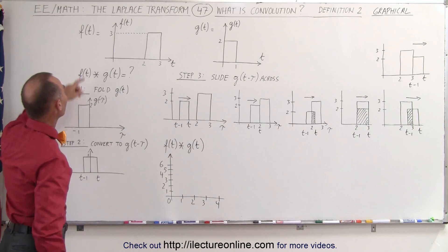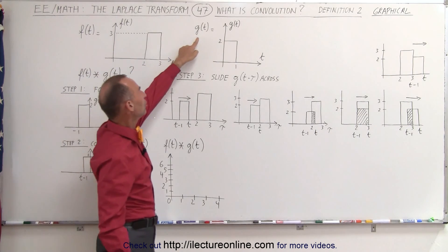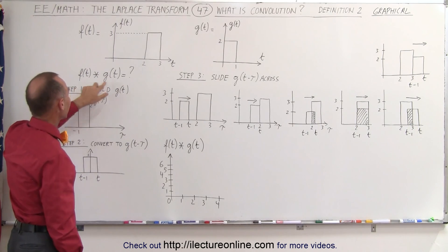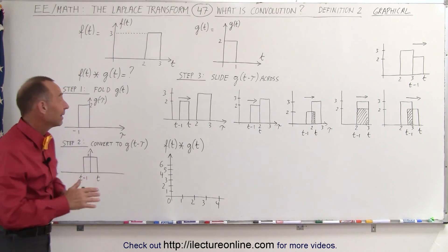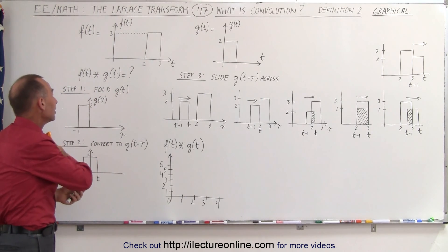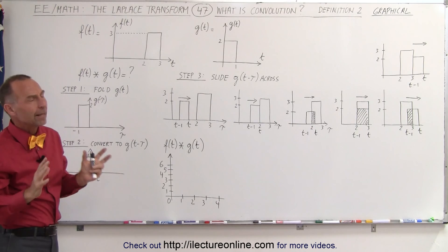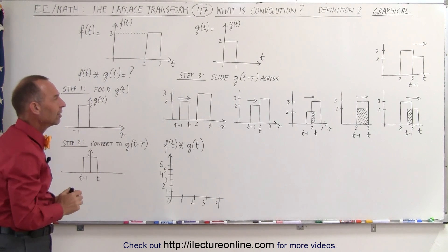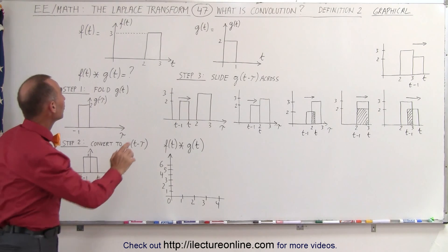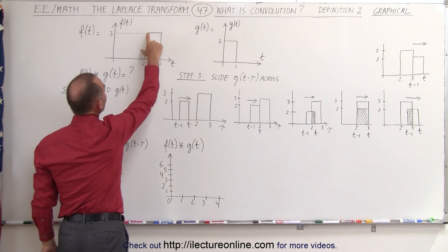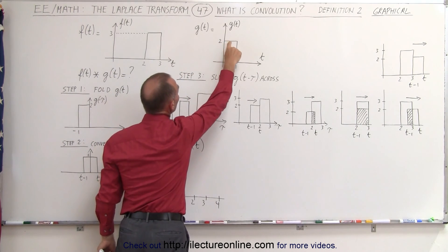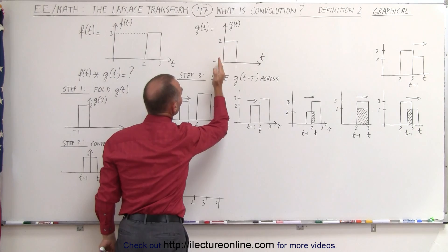Let's say we have two functions, f of t and g of t, and we're trying to find the convolution of f of t and g of t. The convolution of f of t and g of t is exactly the same as the convolution of g of t times f of t. Notice that f of t is equal to 3 between the values of 2 and 3, and g of t is equal to 2 between the values of 0 and 1.